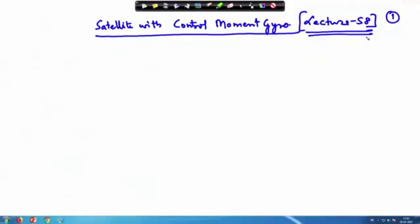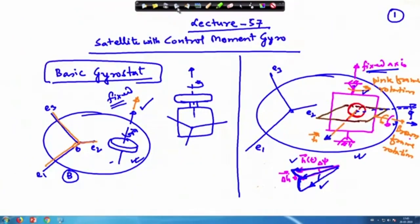Welcome to the 58th lecture. We have been discussing control moment gyros. We have looked into the working principle in a pretty simplified way. Now we will do some mathematics and see the difference — which I have already shown through figures — between the control moment gyros and the basic gyrostate.